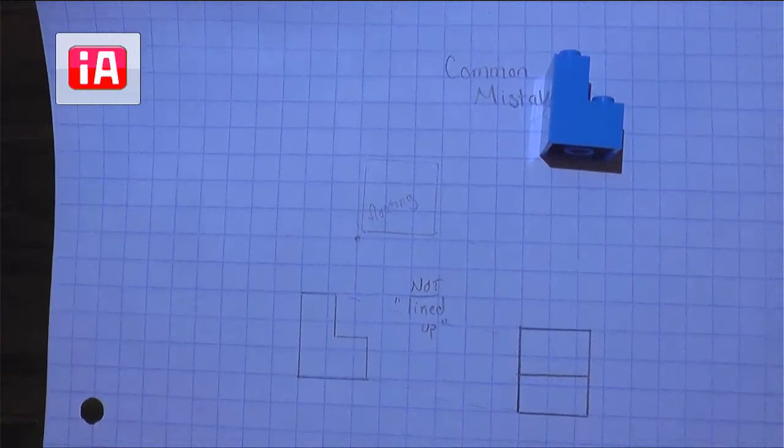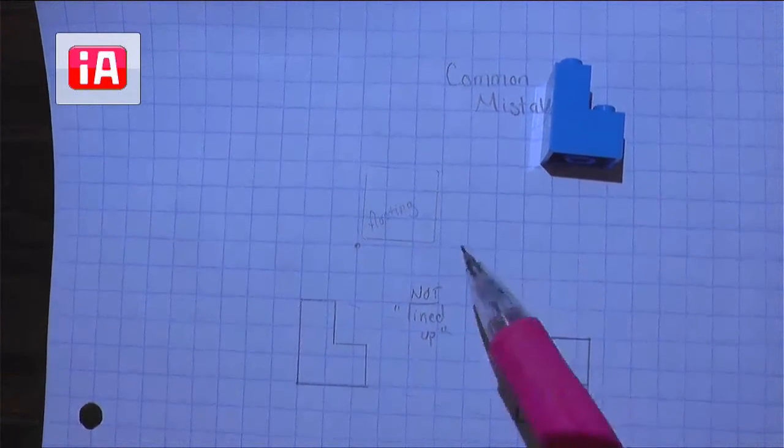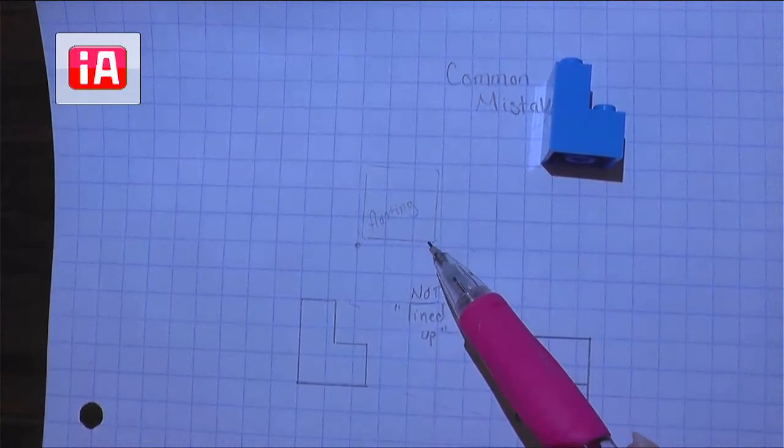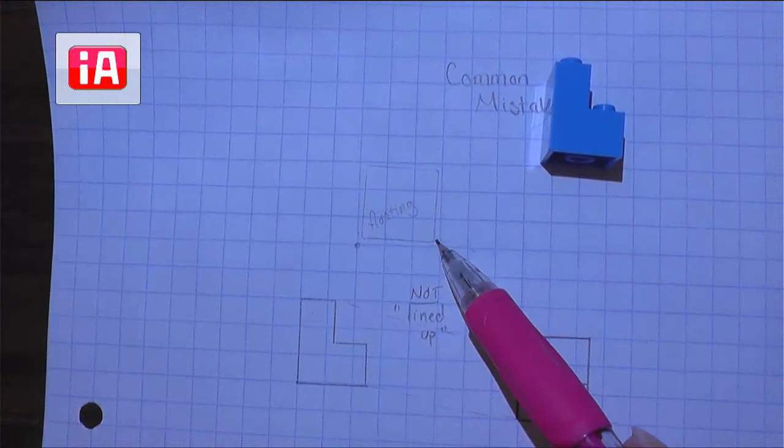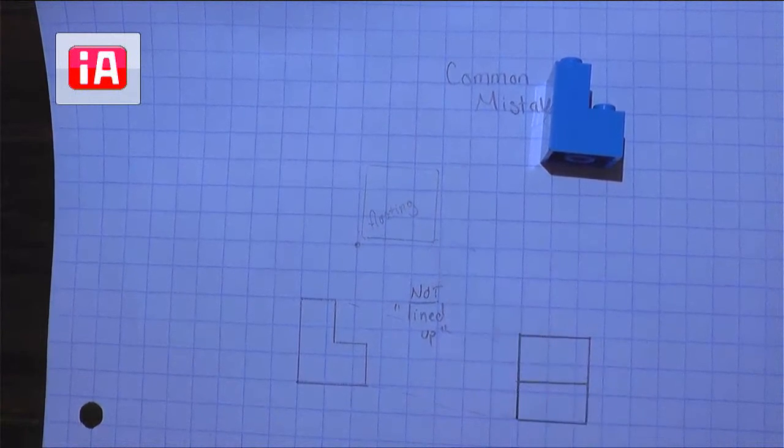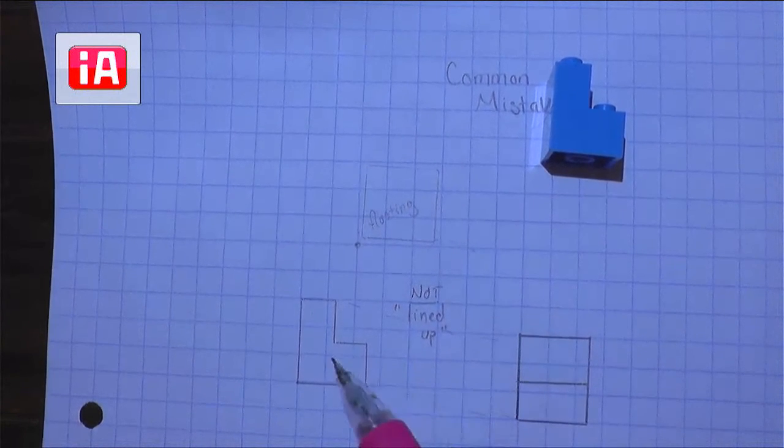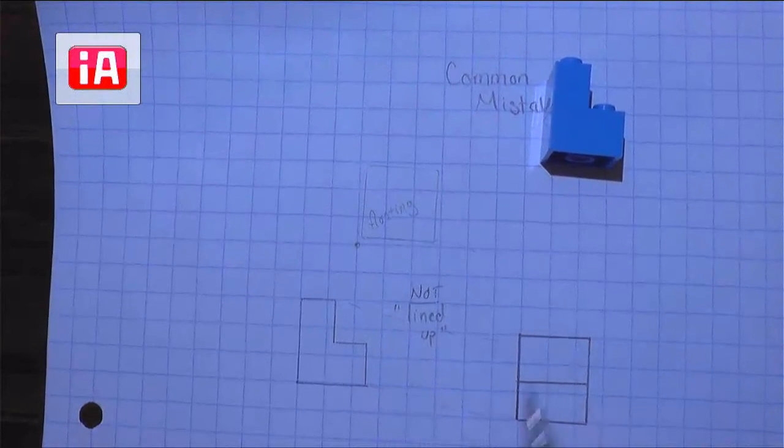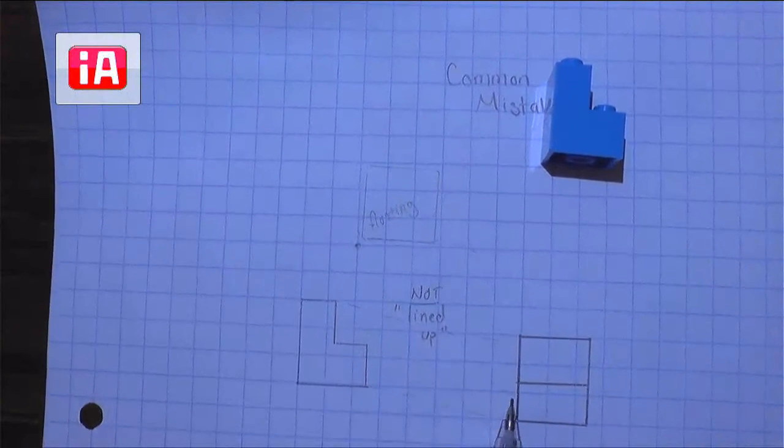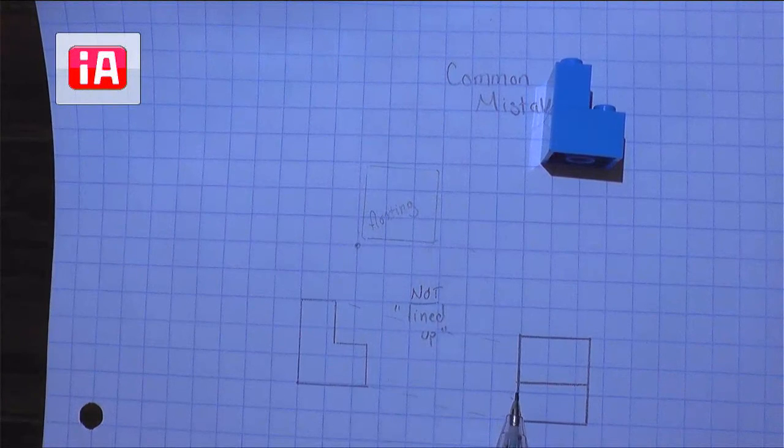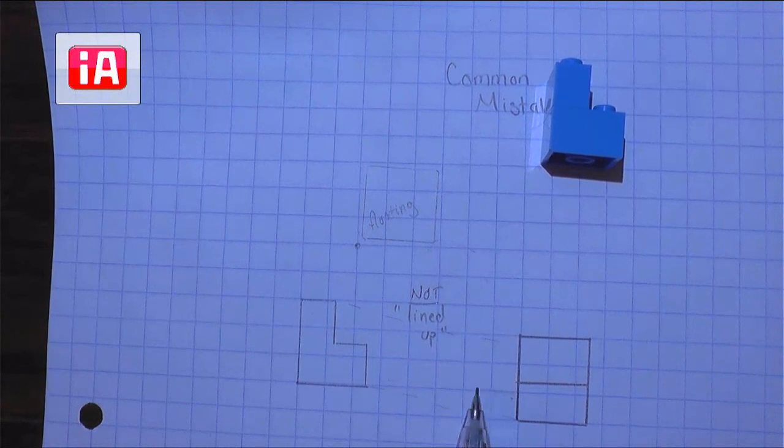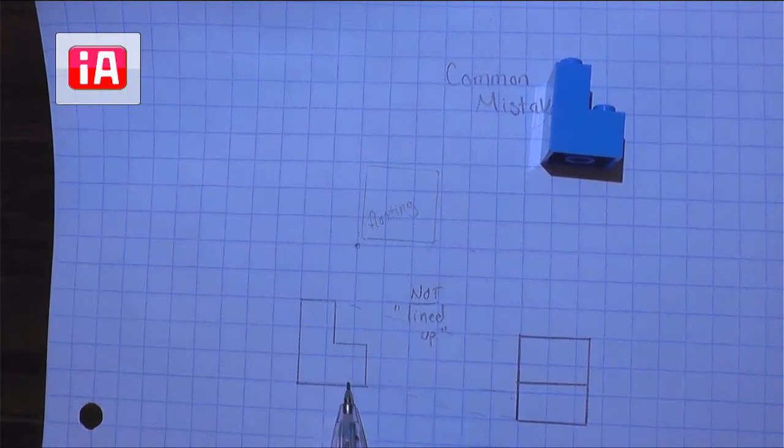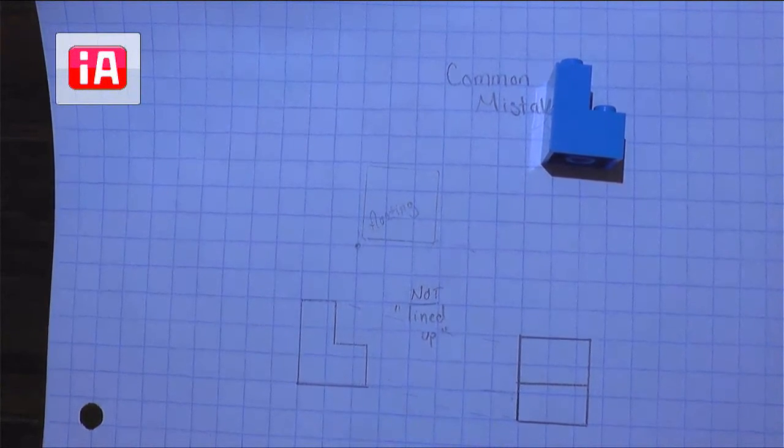So definitely watch out for those common mistakes. Make sure that you are actually measuring and using your ruler to draw your drawings so they're not floating. And make sure that you are lining up your views correctly so they are on the same graph paper lines. Again, you can definitely leave several spaces in between. They do not and should not be touching each other, but you do want them on the same graph paper line as the other views.